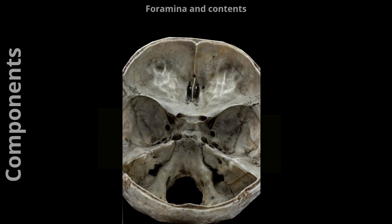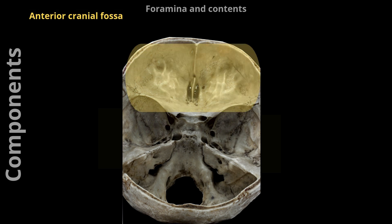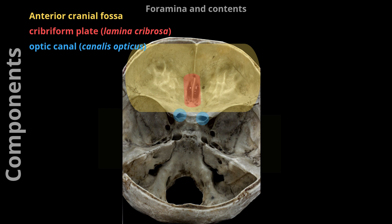Foramina and contents: Most foramina through which relevant nerves and blood vessels pass are located at the base of the skull. The most important structures are discussed ordered by their location in the three cranial fossae. The anterior cranial fossa comprises a holey plate at the center, the so-called cribriform plate (lamina cribrosa). The approximately 20 cribriform foramina serve as a passageway for the olfactory nerves to the olfactory mucosa in the nasal cavity. Both the optic nerve and the ophthalmic artery pass through the optic canal, which is centrally located on the sphenoid bone. The lesser wing of the sphenoid bone (ala minor) forms the dorsal boundary of the anterior cranial fossa.